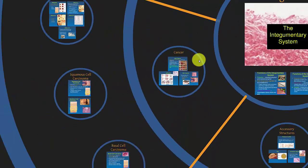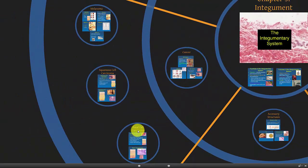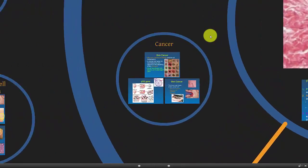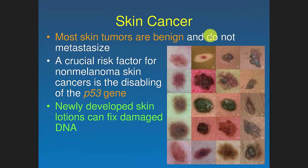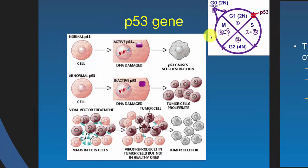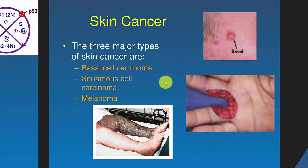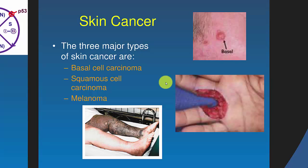Now we're going to get into cancer. There are three main types of cancer that affect the skin: basal cell carcinoma, squamous cell carcinoma, and melanoma. Most skin tumors are benign and don't metastasize, but some do. The key thing seems to be a gene called P53. P53 recognizes when DNA has been mutated in a skin cell — or really any cell — and is supposed to tell a cell not to go through mitosis. People with an erroneous P53 find that damaged cells don't self-destruct and will start to grow into tumor cells.